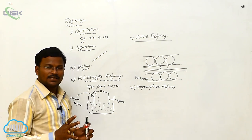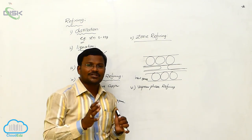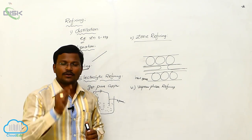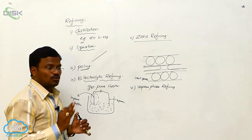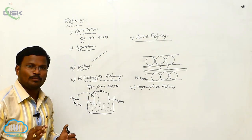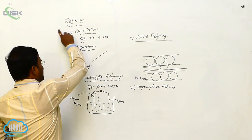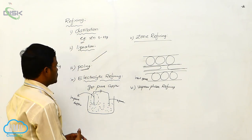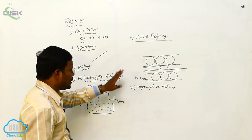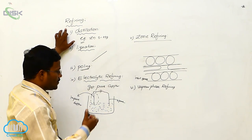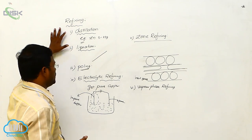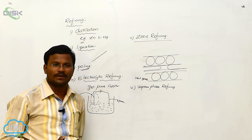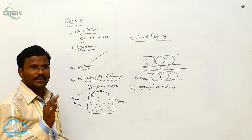So, this is refining. Refining means: the metal extracted from its ore contains some impurities; the resulting metal is called crude metal. We have to eliminate the impurities present with crude metal. This process is called the refining process. Various methods for converting crude metal into pure metal include: distillation, liquation, poling, electrolytic refining, zone refining, and vapour phase refining.